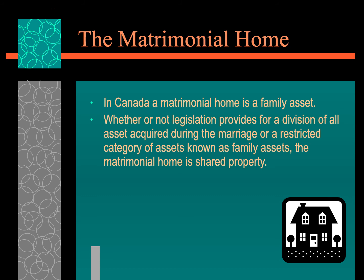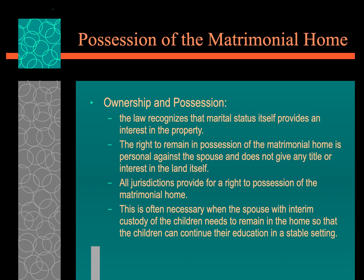The last major piece of family law covered in this course is the matrimonial home. In Canada, the matrimonial home is considered a family asset, whether or not legislation provides for division of all assets or a restricted category of family assets. The matrimonial home itself is shared property. The law recognizes that the marriage itself provides an interest in the property and the right to remain in possession of it — especially if there are children — so that children can have as stable a family living condition as possible until they reach the age of 16 and finish high school.